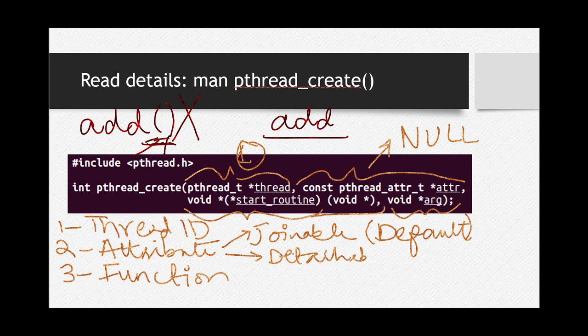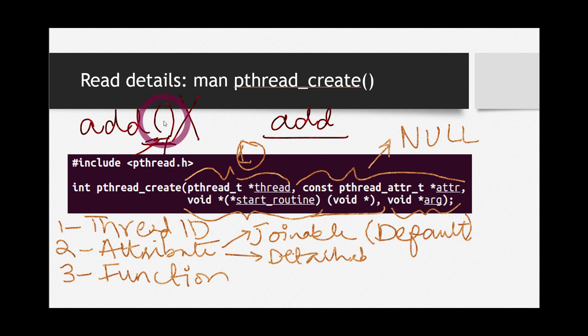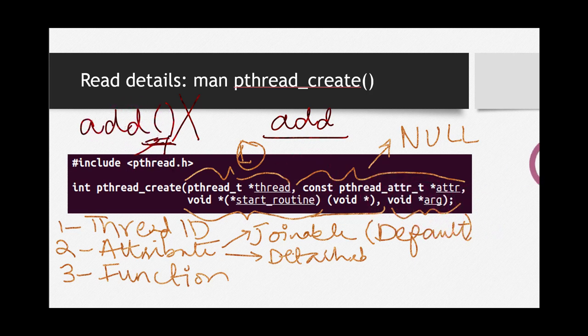The last parameter is simple — these are just the arguments of this function. Since you write only the name of the function and not a function call, you pass any parameters you want to send to the function using this fourth parameter. The data type of those arguments must be void pointer.